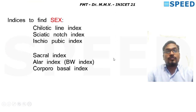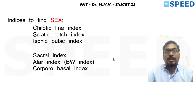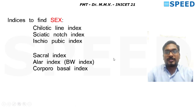We have completed the six indices to find race. Now moving to the second application: indices to find sex. Remember the mnemonic CSI — Cheilotic line index, Sciatic notch index, Ischiopubic index. Today we cover only these first three; remaining indices will be covered tomorrow.